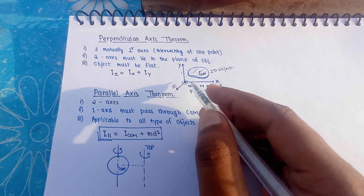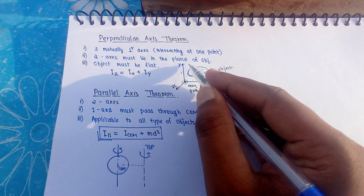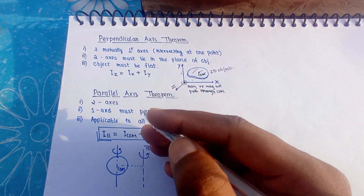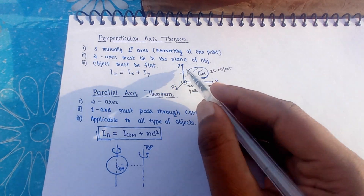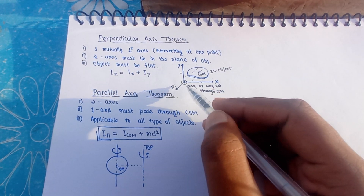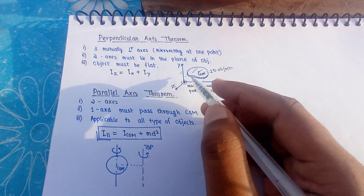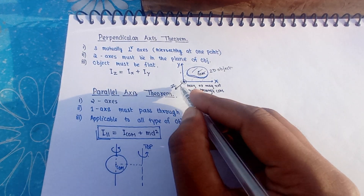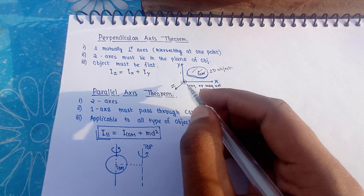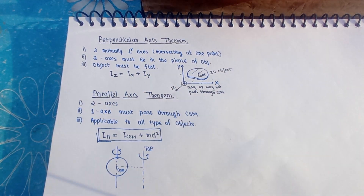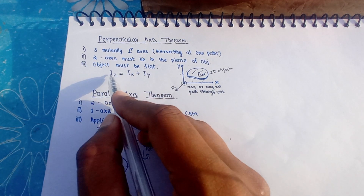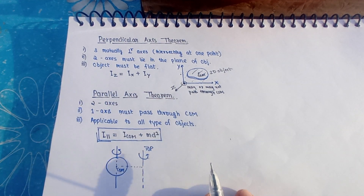We have to calculate the moment of inertia about the z-axis, which is perpendicular to the x-y plane and passes through the intersection of the other two axes. To do this, we first calculate the moment of inertia about the x-axis, then about the y-axis, and add them together to get the moment of inertia about the z-axis. Remember this — it is used in many questions.